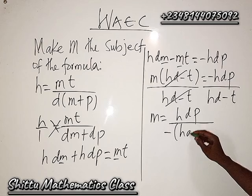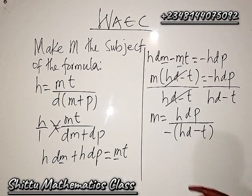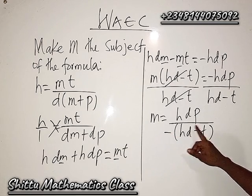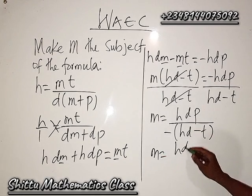Now I can try to rewrite this. If I should rewrite this using this negative to open the bracket, you can see that I'm going to have m equals h·dp divided by, you know that minus times minus will give us plus.